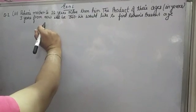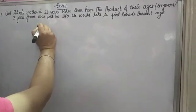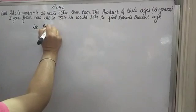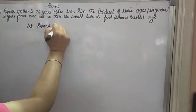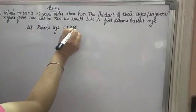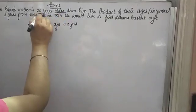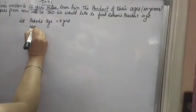Rohan's mother is 26 years older than him. So let Rohan's age be equal to X years. So his mother is 26 years older, means mother's age will be X plus 26 years.